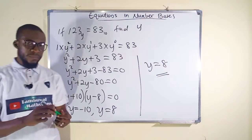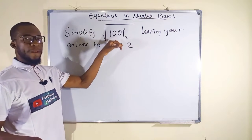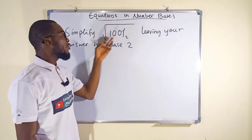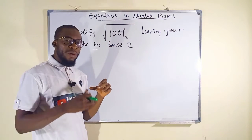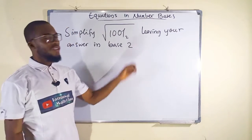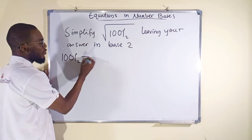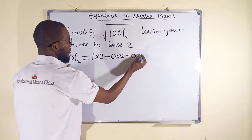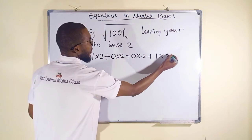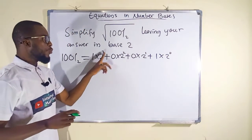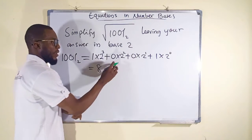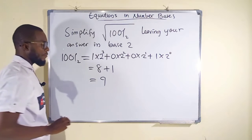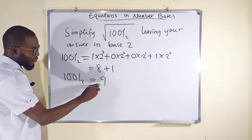Our last question asks us to simplify the square root of 1001 in base 2, leaving the answer in base 2. It is difficult to take a square root directly in base 2, so we convert to base 10 first. Using positional values: 1×2³ + 0×2² + 0×2¹ + 1×2⁰ = 8 + 0 + 0 + 1 = 9. So 1001 in base 2 equals 9 in base 10.